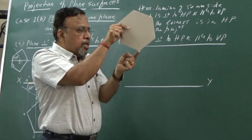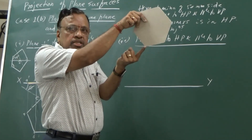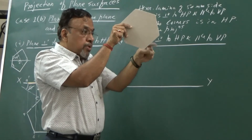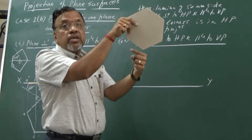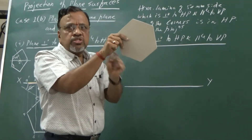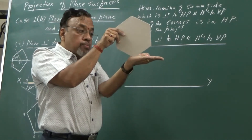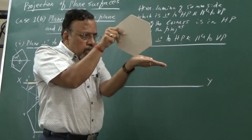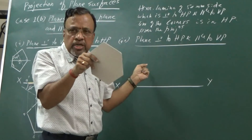Since one of the corners is in HP, if I hold it such that the two adjacent sides make equal inclinations, that gives a unique solution. If I hold it differently, the two adjacent sides will not make equal inclinations. So whenever we say a corner is in HP, always consider that the two adjacent sides will make equal inclinations, so that we get a unique solution.